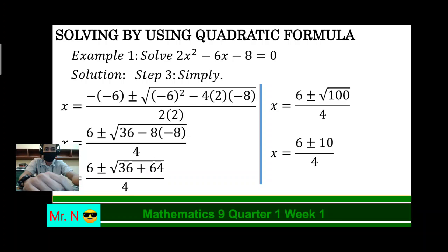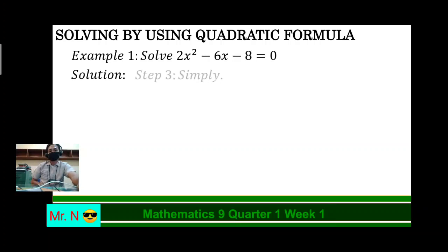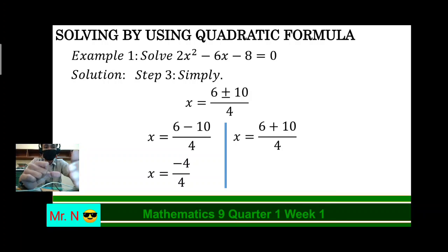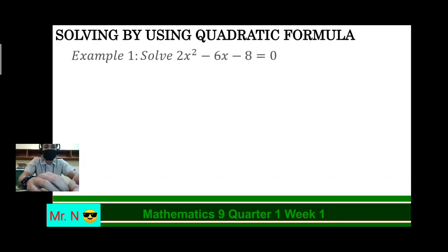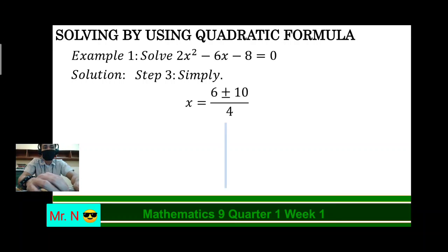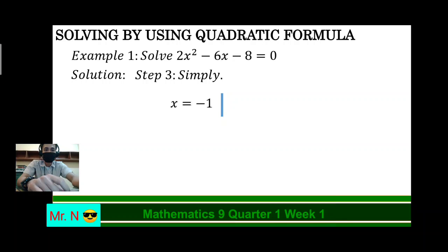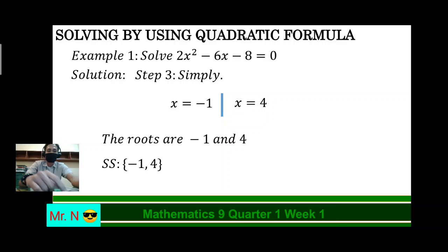So we have two operations here — one is plus and one is minus. We need to separate them before simplifying. So we have 6 minus 10, all over 4, and on the other side, 6 plus 10, all over 4. Simplify: 6 minus 10 is negative 4 over 4, and 6 plus 10 is 16 over 4. Negative 4 divided by 4 is negative 1, and 16 divided by 4 is positive 4. Therefore, class, the roots are negative 1 and 4. Or simply, we can write the answer as: solution set, negative 1 and 4.